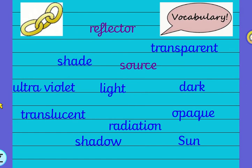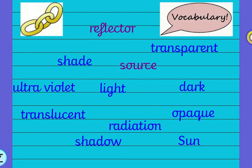These are our words, our vocab that we have been looking at as part of our new science topic all about light. Last week we learned about some of these words, but we will come back to those shortly. I'd like you to see our two new vocabulary words that have appeared on our vocab mat and we will be using those today. We've got the word reflector and we've got the word source.